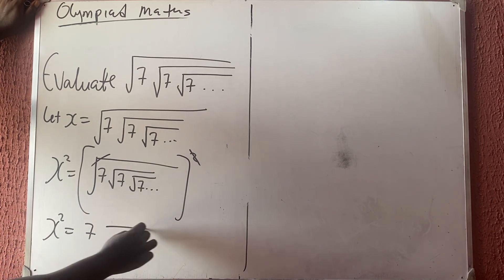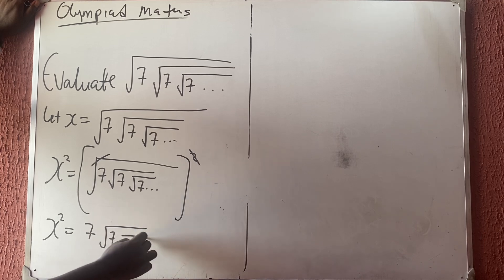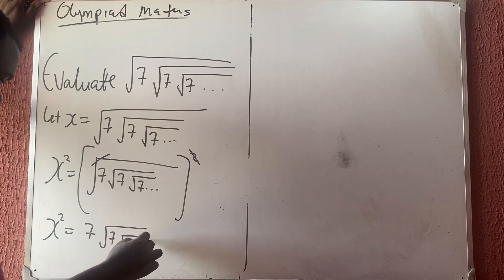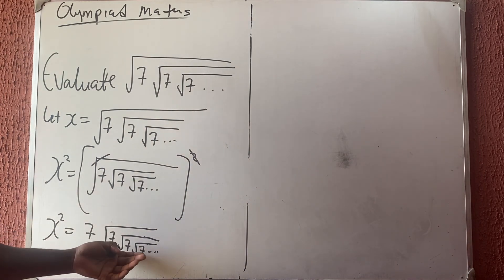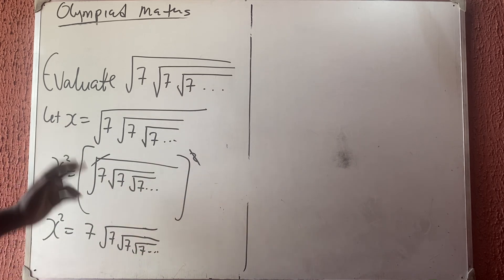7 outside the square root of 7, the square root of 7, the square root of 7, till infinity. Now we have said that this thing is equal to x, so I can replace it with x.